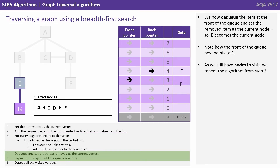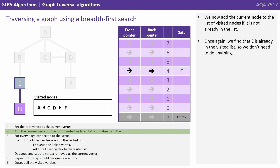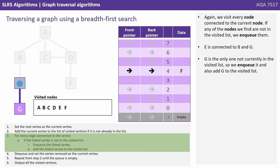We now dequeue the item at the front of the queue and set the removed item as the current node. So E becomes the current node. Note how the front of the queue is now pointing at F. As we still have nodes to visit, we repeat the algorithm once more from step 2. We add the current node to the list of visited nodes if it's not already in the list. We find that E is already in the visited list, so we don't need to do anything. Again, we visit every node connected to the current node, and if any are not in the visited list, we enqueue them. E is connected to both B and G. G is the only one not currently in the visited list, so we enqueue it and also add G to the visited list.